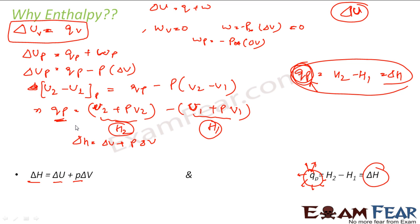When you talk about internal energy change at constant pressure, at constant volume things are simple so we use delta U only. At constant pressure, the P·delta V part also comes into picture — sometimes the system does work, sometimes work is done on the system, but volume is not constant. So instead of always writing delta U plus P·delta V, we use the term H — enthalpy — and delta H is the enthalpy change, which equals heat transfer at constant pressure.